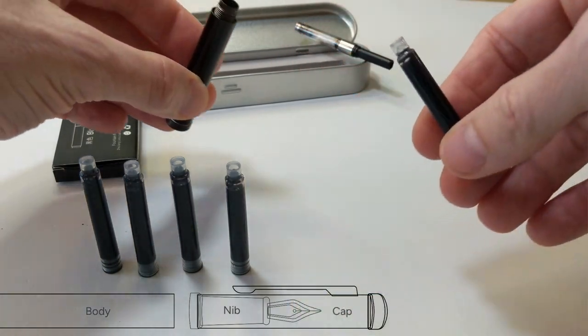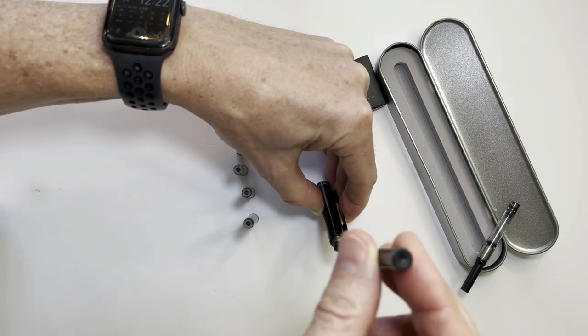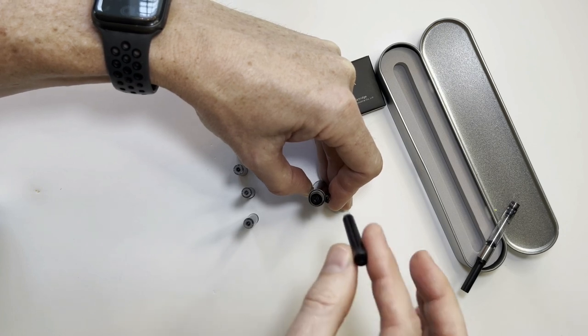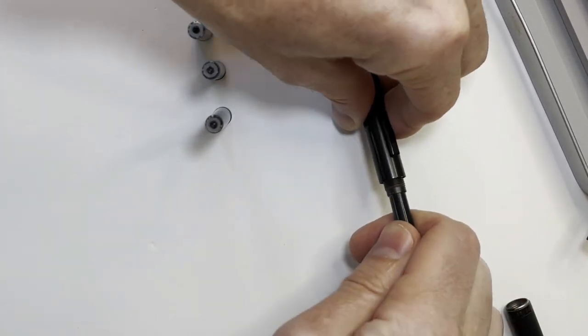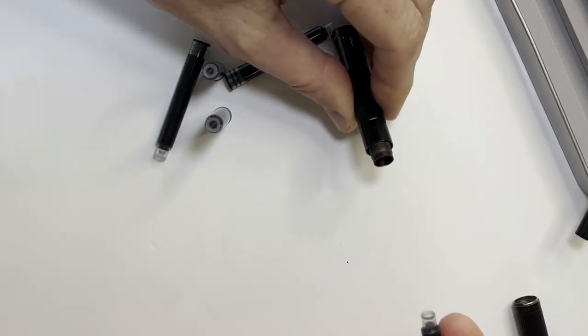Then we're going to take the cartridge and push it into the nib using the cap to brace while we're pressing. You'll see I have to press incredibly hard in this horizontal position. And even then, it doesn't go in.